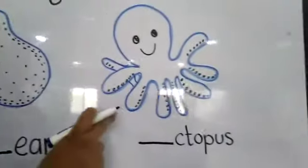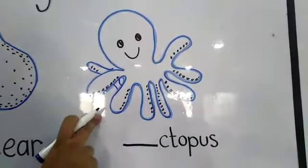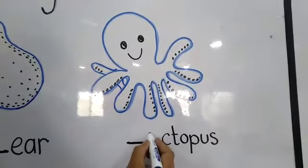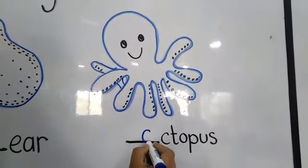Next picture is octopus. The starting sound of octopus is O.